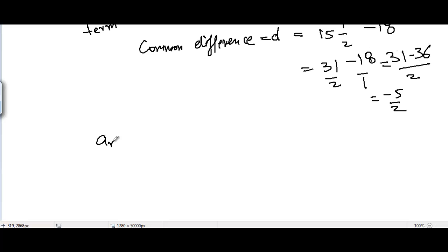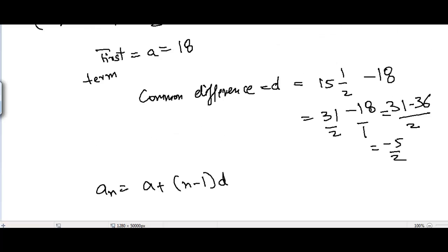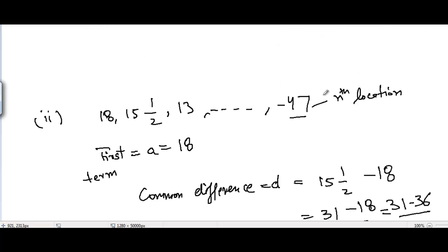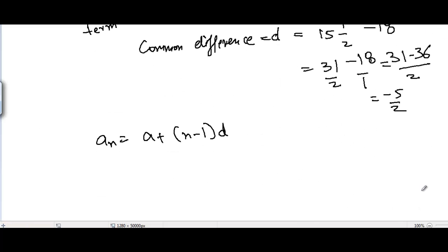Now I can apply a formula which is used to find the nth term of any arithmetic progression, which we used in the first part. The nth term we have here is -47. So -47 = 18 + (n-1)(-5/2).